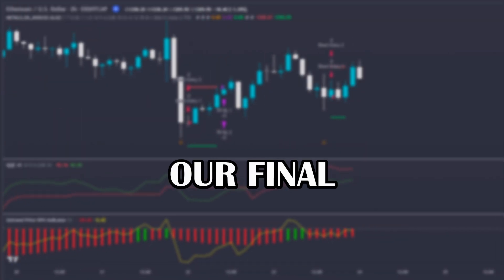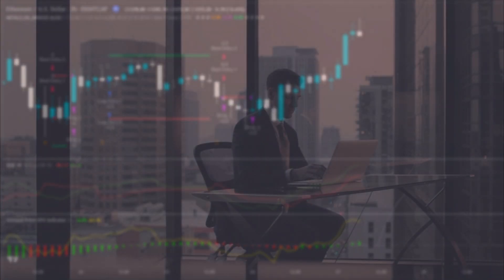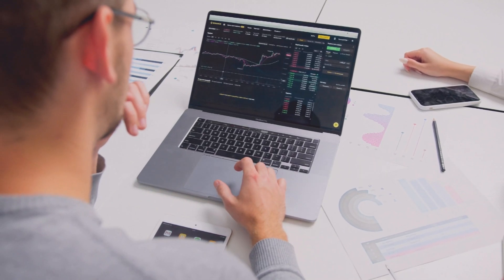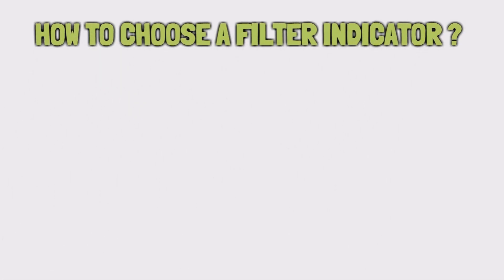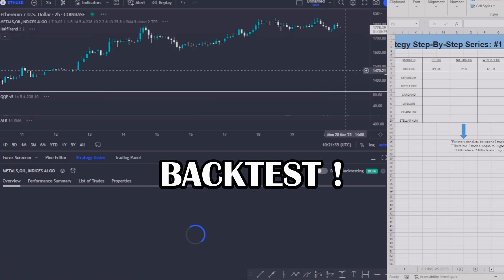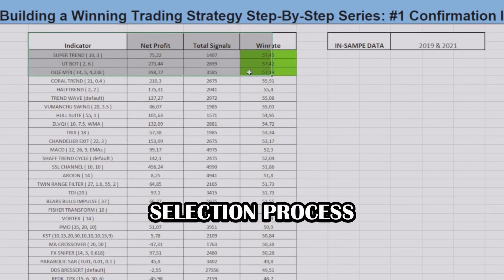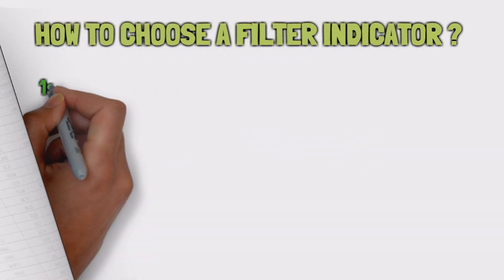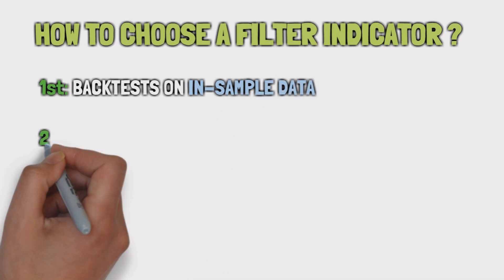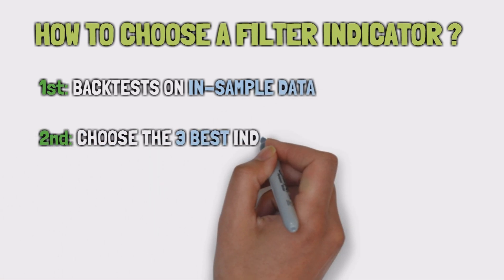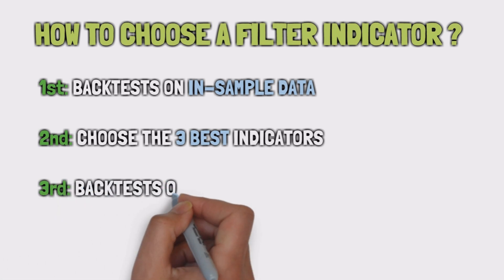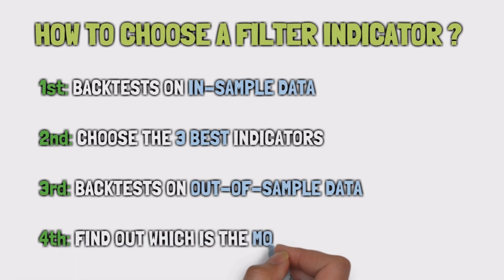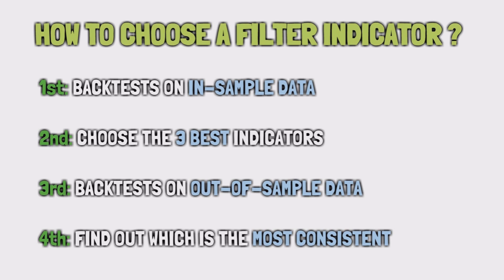This is so that our final trading system is as efficient and diversified as possible. Of course, this is my advice based on my knowledge and experience, so you can do it as you wish. To know which one is the best for your strategy, we just have to backtest as many filter indicators as possible. The selection process is exactly the same as the one used for choosing the confirmation indicator. We will do a lot of backtests on our in-sample data, where we will choose the three best filter indicators that increased the win rate of our system the most, to carry out backtests on the out-of-sample data. After that, we will know which one is the most consistent and if any optimization is necessary.